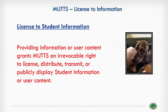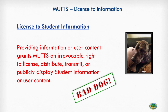License to student information: providing information or user content grants MUTTS an irrevocable right to license, distribute, transmit, or publicly display student information or user content. This provision appears in many terms of service agreements, though it is getting less frequent in EdTech. It is really problematic because it essentially grants them the right to use the information for whatever they want — for their own purposes, to redisclose it, et cetera. This is very much a bad dog provision.